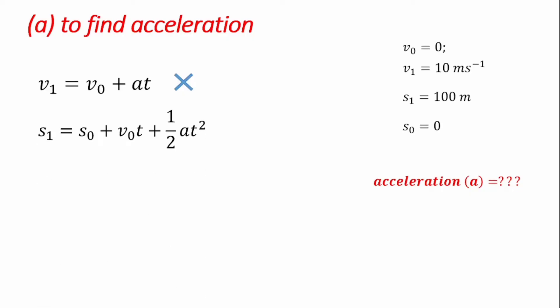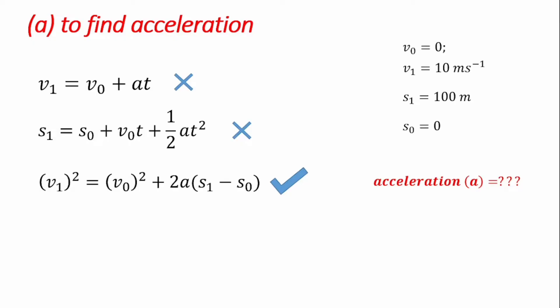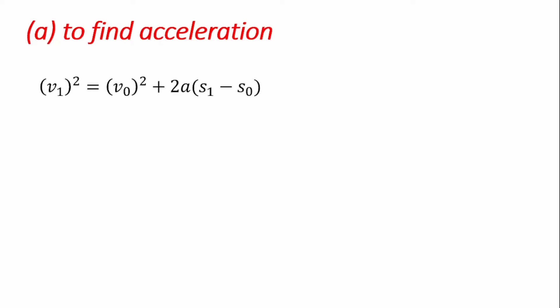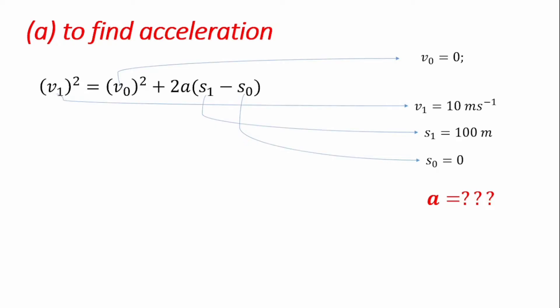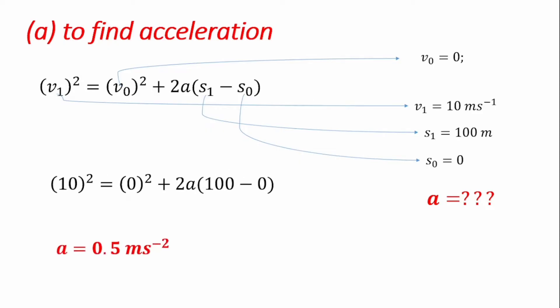If we bring out the second formula, it also has acceleration and time, which we do not have among our given parameters, so this is also unsuitable. The last formula, V1² equals V0² plus 2A·(x1 − x0), is suitable because we have all the variables apart from A, which we are looking for. We use this formulation, input all our parameters into their correct positions, simplify, and find our value for acceleration, which is 0.5 meters per second squared.